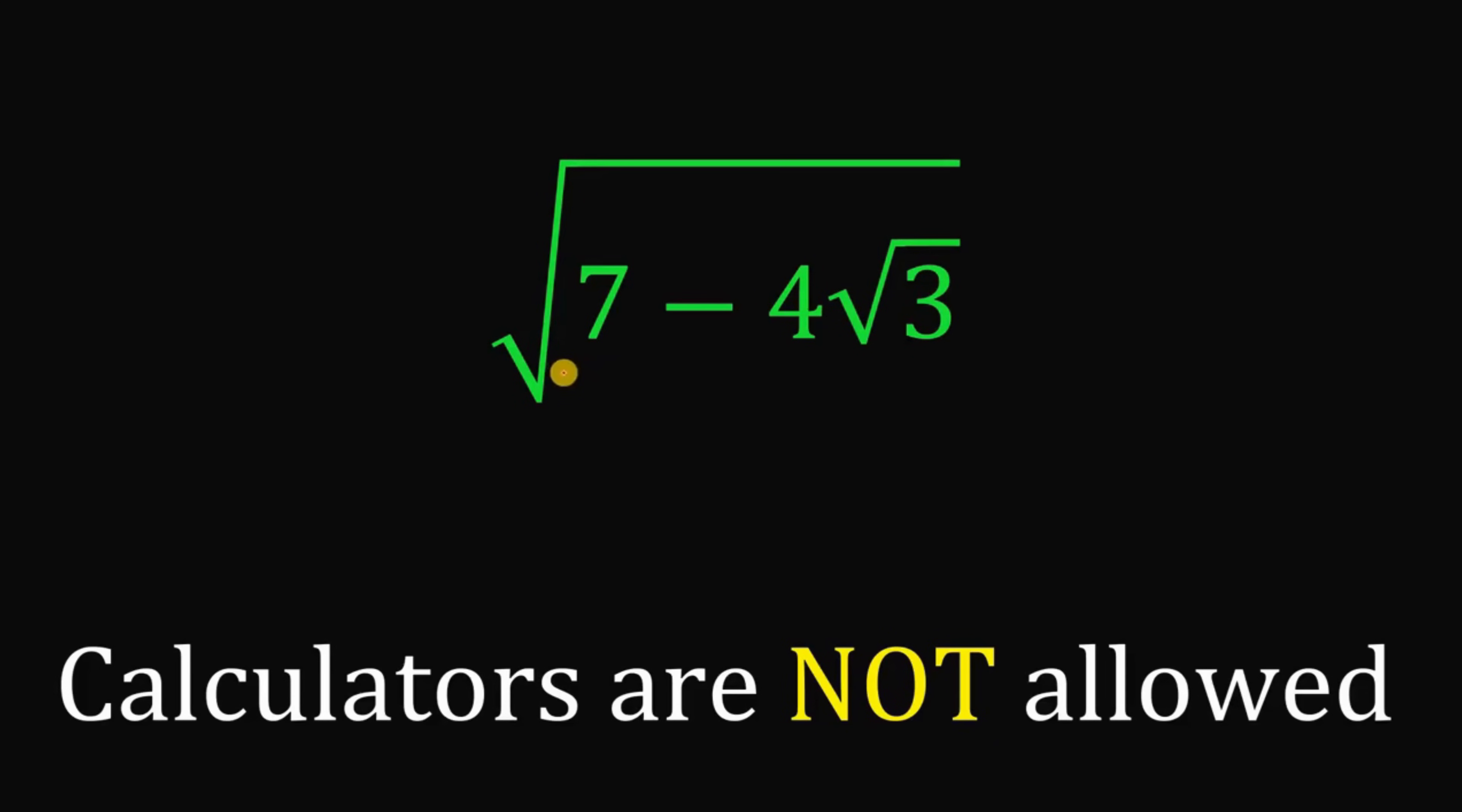Now, to fully simplify this, what we're going to do is to rewrite this 7, because take note that 7 simply equals 4 plus 3. Now, the question is, why 4 plus 3? Why not 5 plus 2 or 6 plus 1? The reason why 4 plus 3 is because we have here square root of 3. So we can use this 3 to make square root of 3.